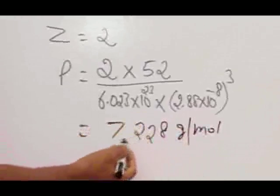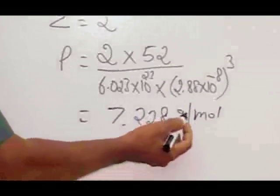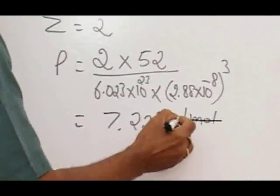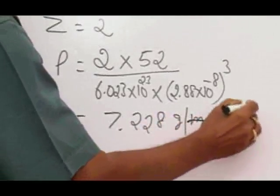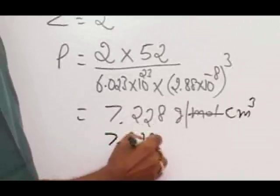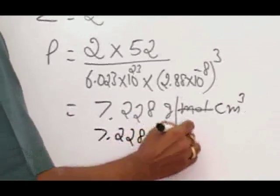Suppose in the problem, if it is expected in kilogram per cubic centimeter - well, we have 7.228 grams per cubic centimeter.